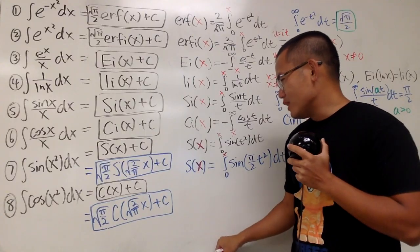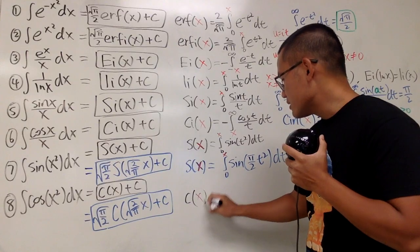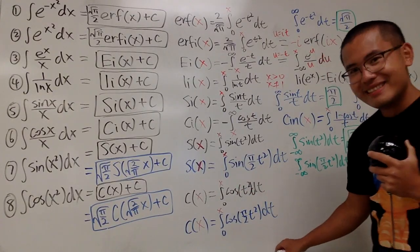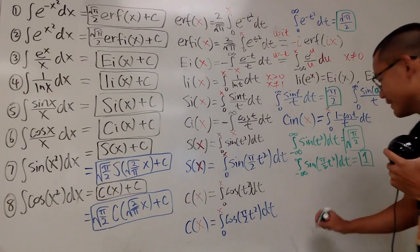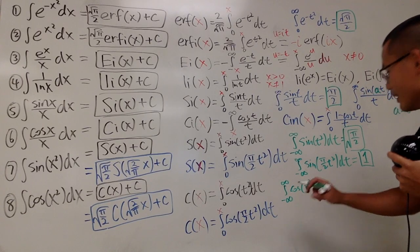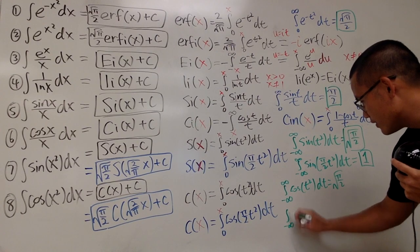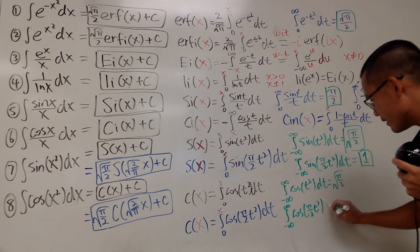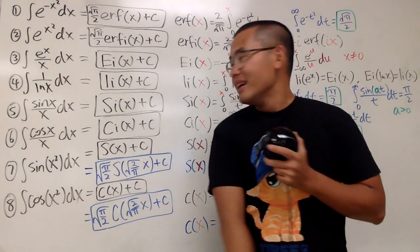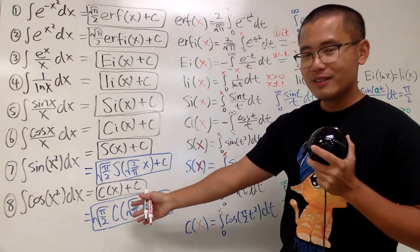Finally, C of x for the Fresnel cosine integral. It's pretty much the same as S of x, but you change sine to cosine. So C of x equals the integral from 0 to x of cosine of t squared dt. That's it — a lot of new functions today. Hopefully you guys all enjoyed this. Keep this in mind, because I would like to do more videos with these special functions — integral battles for you guys.